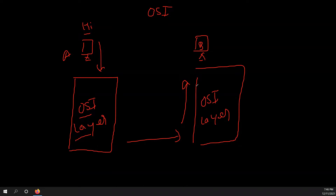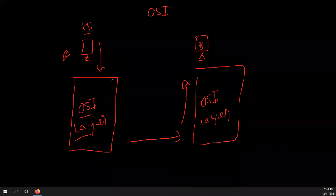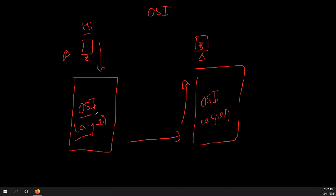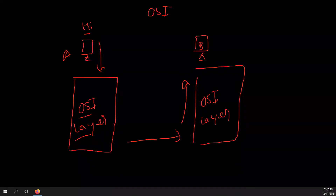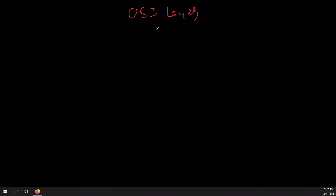Whether a computer wants to send any data or do any chatting, the OSI layer handles it. Any computer sending data to any networking device will follow the OSI layer model communication. Now let's talk about how OSI layer works. In total there are seven layers. Those seven layers starting from Application layer, Presentation layer, Session layer, Transport layer, Network layer, Data Link layer, and finally Physical layer.